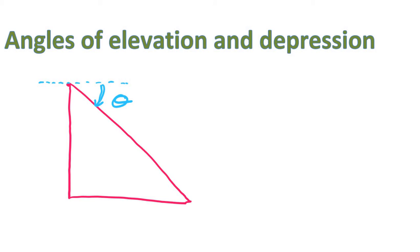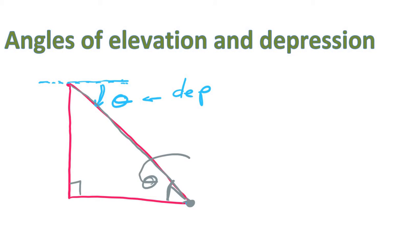That's what we call the angle of depression: when you're looking down from horizontal. And if you are actually here on the ground, from a distance, and you're looking up to the top of the building, the angle measured from here to here is called the angle of elevation.